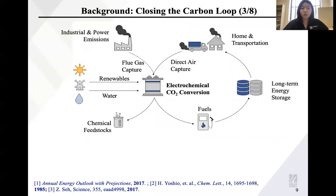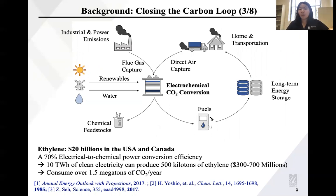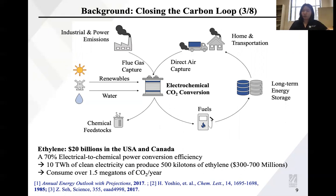With those challenges, we come to our topic: the electroreduction of carbon dioxide, which is a solution that can utilize renewable energy-driven electricity as well as those captured CO2, converting them to valuable chemical feedstocks or fuels. If we can convert CO2 electrochemically to ethylene with a selectivity of 70%, we can generate a profit of $20 billion in the USA and Canada. So it is a pretty promising technology to be industrialized.